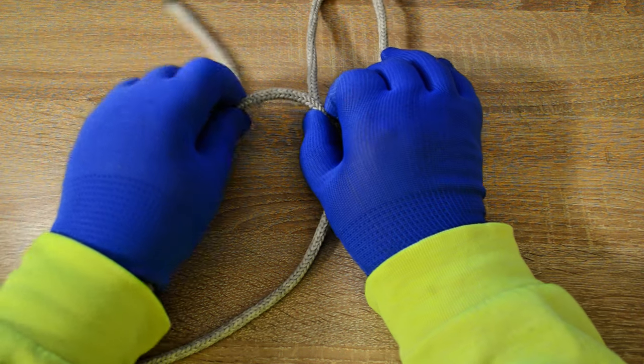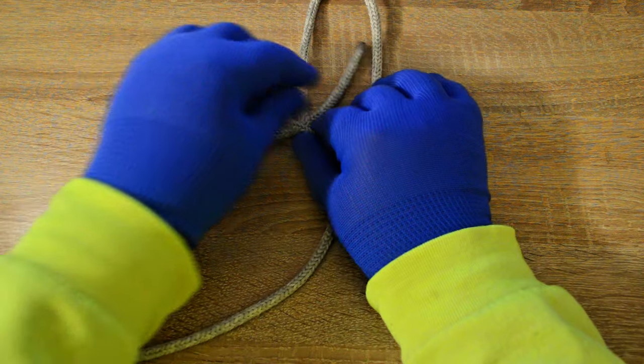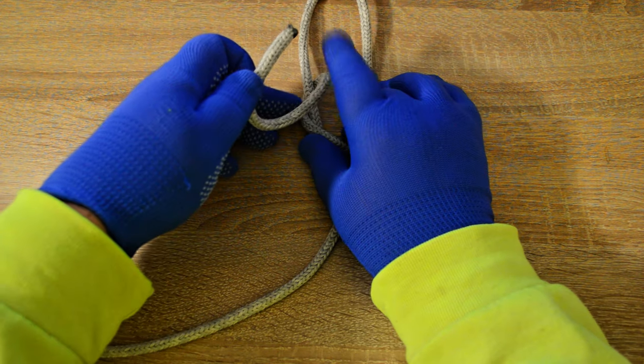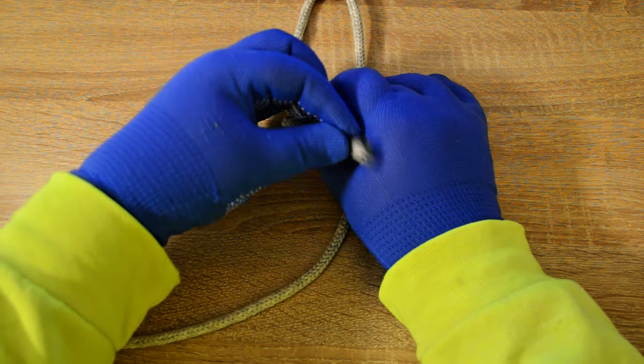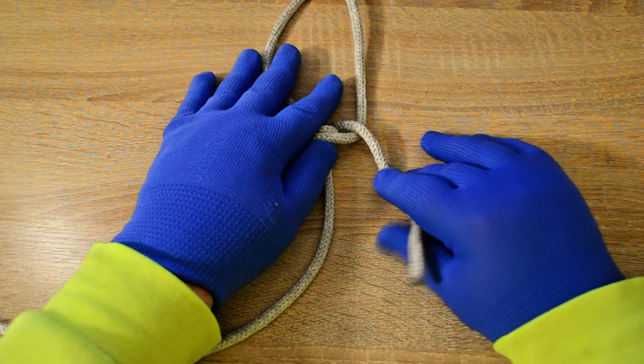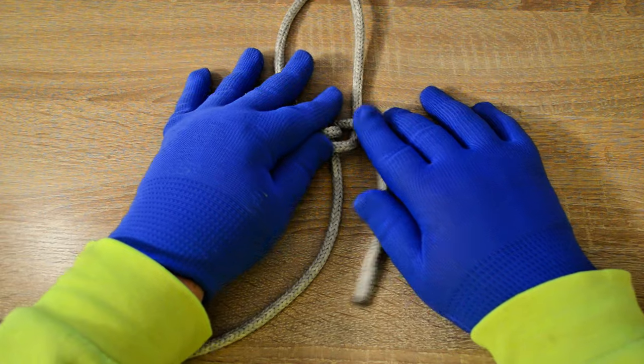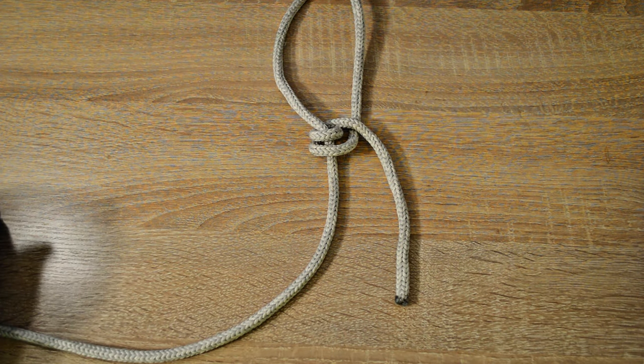Next, take the end of the rope and wrap it around the left side of the loop twice. Then take the end of the rope and place it over the standing part of the rope to create another loop.